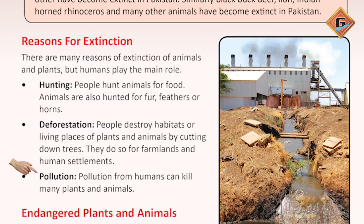Our animals and plants are also affected by pollution. Our city areas, our natural resources and natural areas are affected by pollution. Plant life and animal life are impacted, which is why many species become extinct.